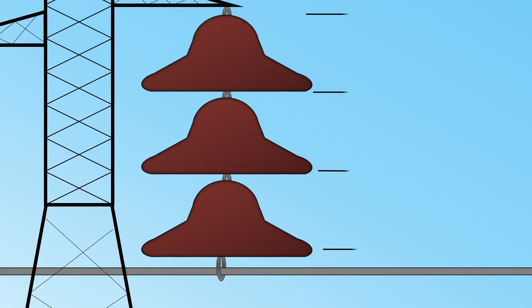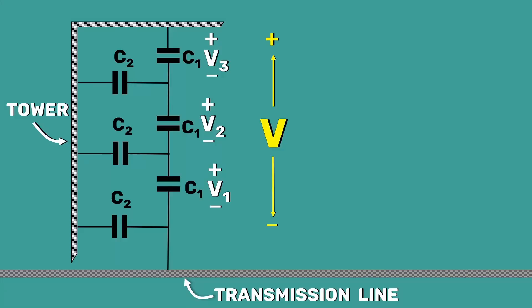Now, let's find the voltages V1, V2 and V3 and analyze whether they are equal or not. To simplify, let's assume C2 by C1 as a constant K.